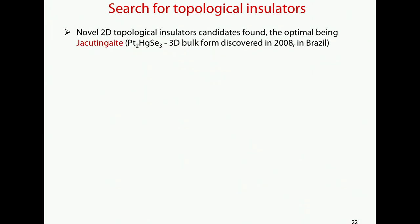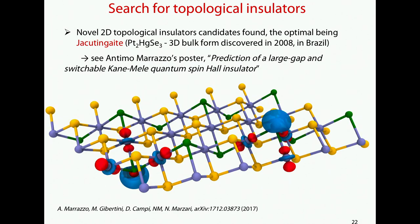We also searched for topological insulators and actually found one. Antimo Marazzo found one, and there is a paper on this. It's based on jacutingaite, a known 3D bulk compound that was discovered in Brazil.